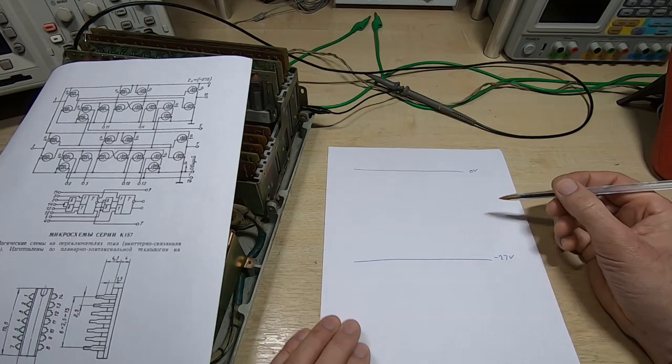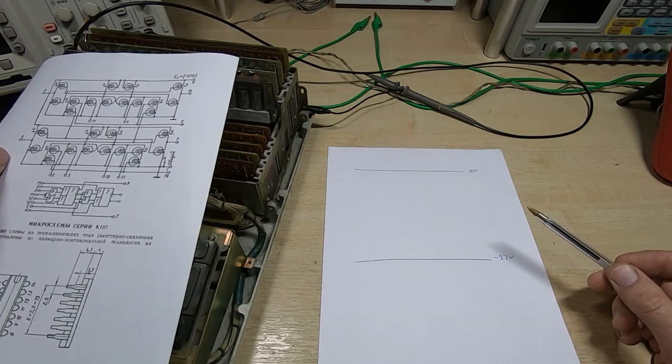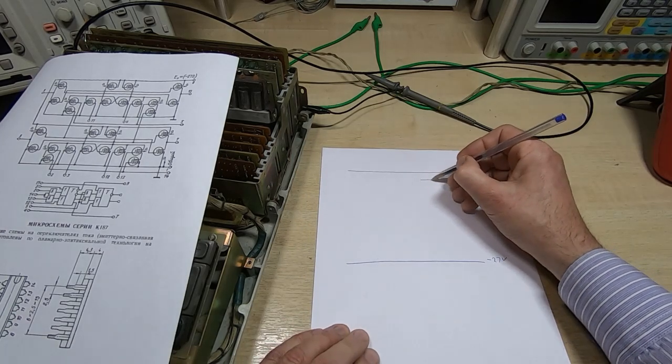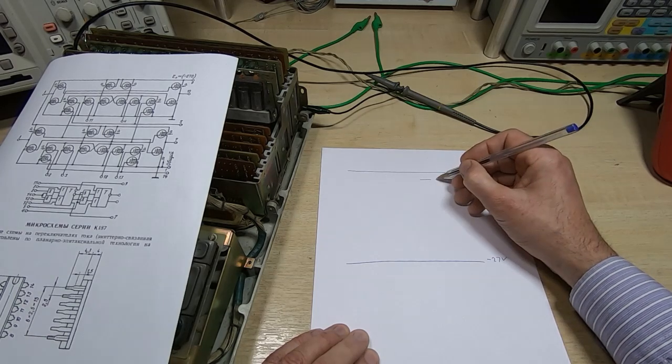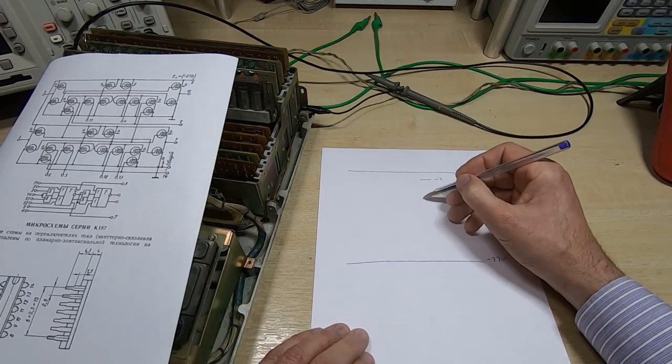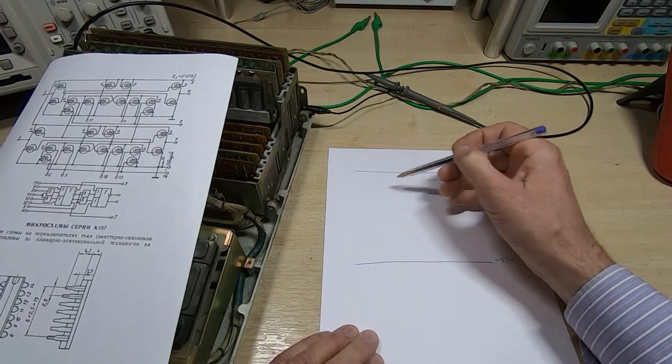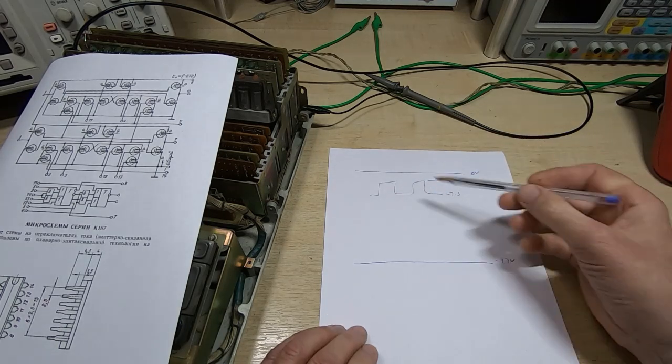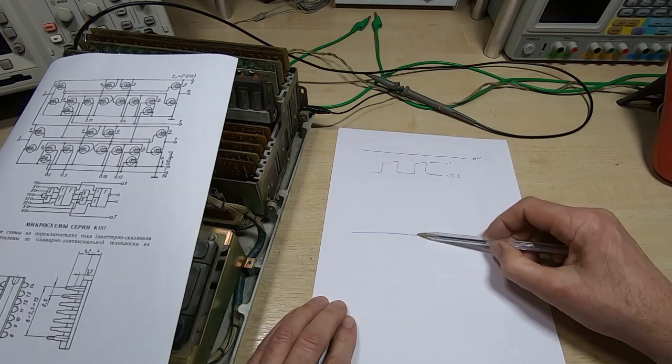However you're not going to get a 27 volt voltage swing. You'll have zero volts and you'll have your minus 27 volt supply rail, but the switching voltages on the output, the high level or low level, will be somewhere between zero and minus two volts and the high or low voltage output will be around minus 7.5 volts.